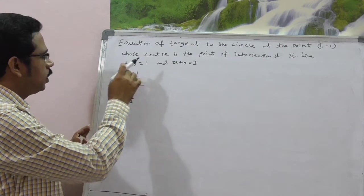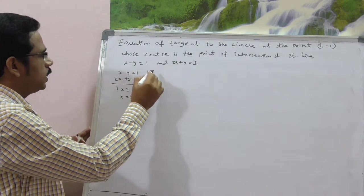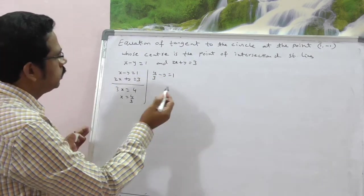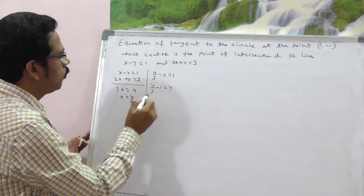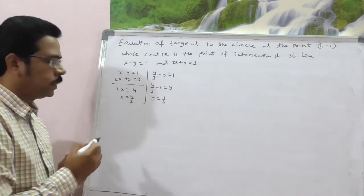Put x in any one of the equations. I am substituting x in equation 1. Here it is, 4 by 3 minus 1 is, minus y is equal to 1, so that implies what is y. 4 by 3 minus 1 is equal to y, that is nothing but 4 minus 3, y is equal to 1 by 3.